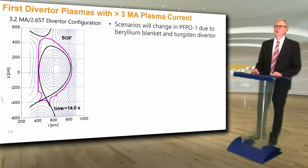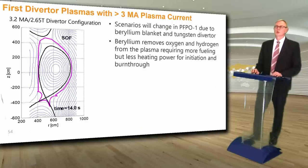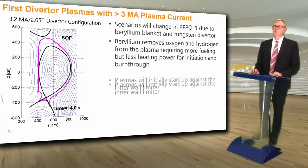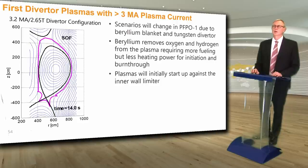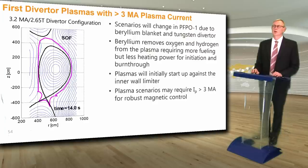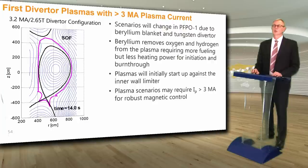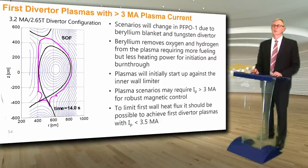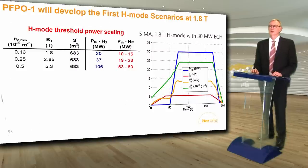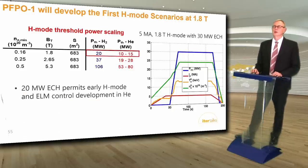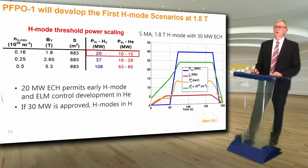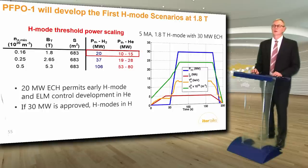Plasma scenarios will change in PFPO1 due to the beryllium blanket and tungsten diverter. Beryllium removes oxygen and hydrogen from the plasma, requiring more fueling but less heating power for plasma initiation and burn through. Plasmas will initially start up leaning against the inner wall limiter. Diverted plasma scenarios may require a plasma current greater than about 3 megaamps for robust magnetic control. According to the H-mode threshold scaling, 20 megawatts of ECH heating should permit early H-mode operation and initial ELM control development in helium plasmas; if 30 megawatts is approved, H-mode in hydrogen will be possible at low toroidal field.